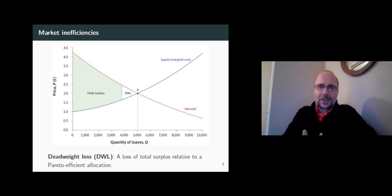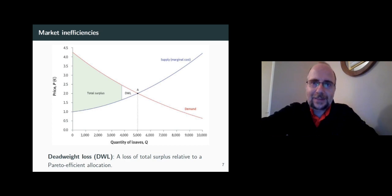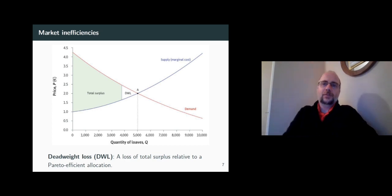Notice also that the market equilibrium is Pareto efficient. Point A is Pareto efficient. That is, you can't make the consumers better off without making the firms worse off at point A.